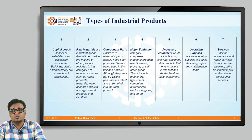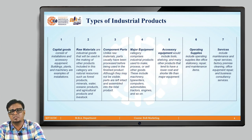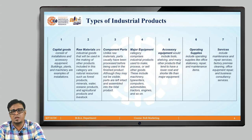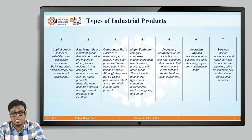Sixth, operating supplies, including office stationery, repairs, and maintenance. And seventh, services, which include maintenance, repair services on factory premises — such as cleaning, equipment repair, consultancy services, and many other allied services.